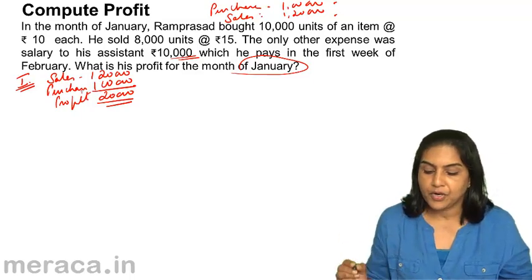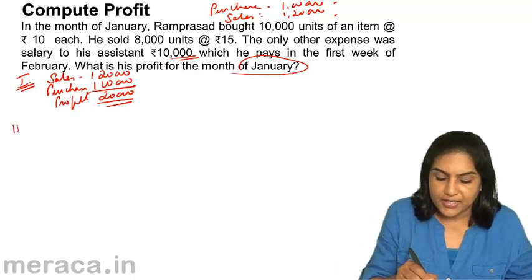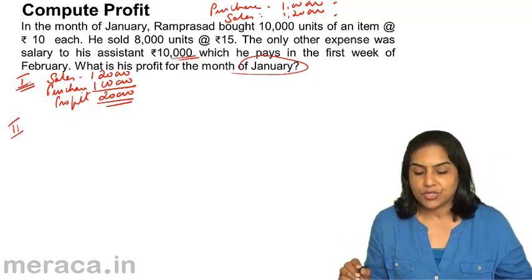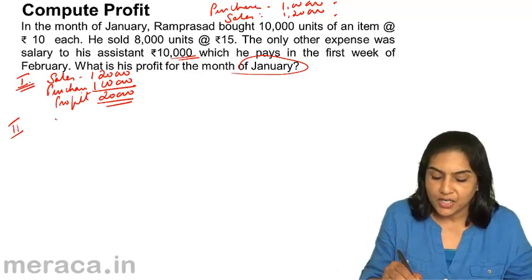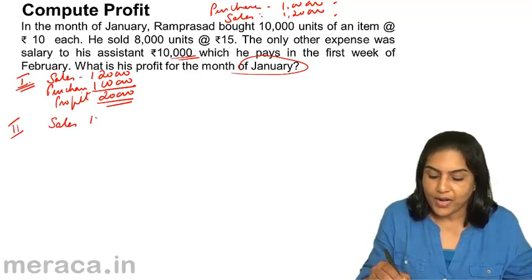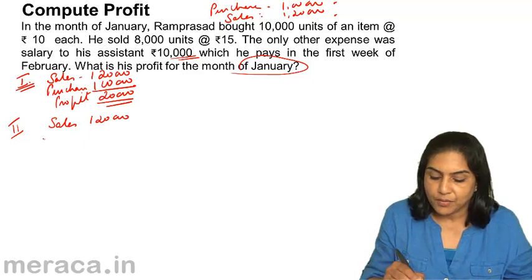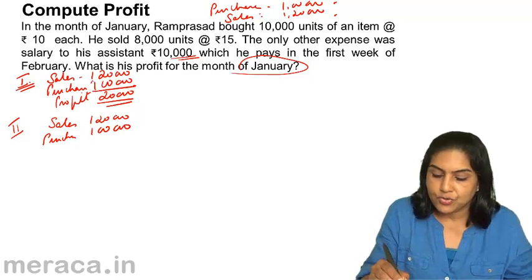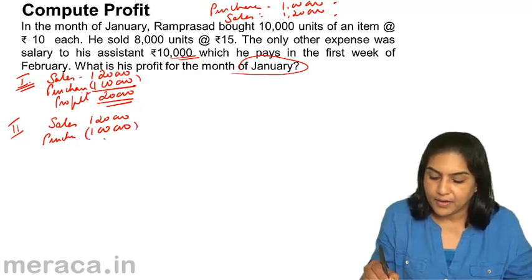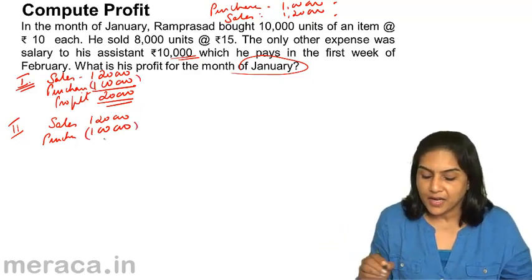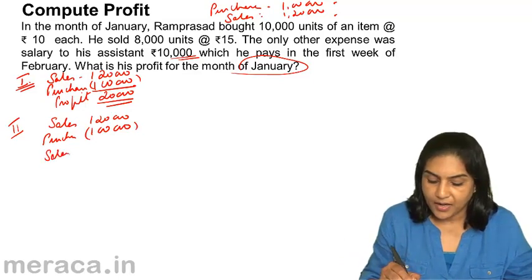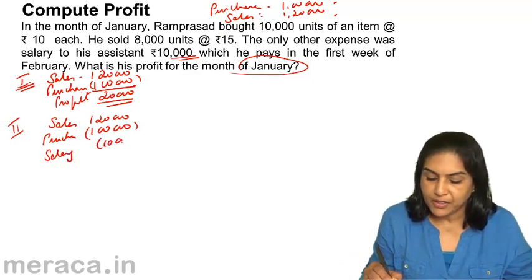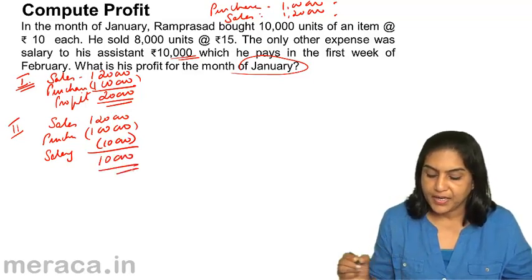The second accountant says: no, sales is 1 lakh 20,000 and purchases is 1 lakh — true — but the salary expense belongs to the month of January, therefore the profit should be 10,000.